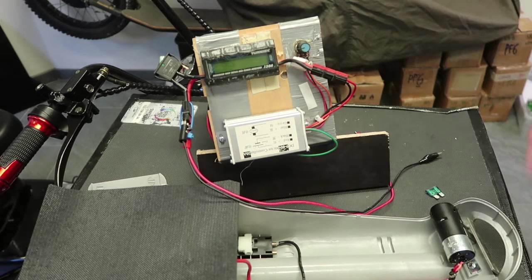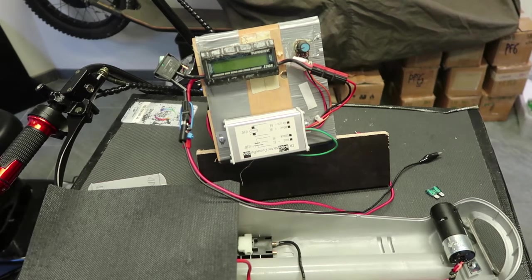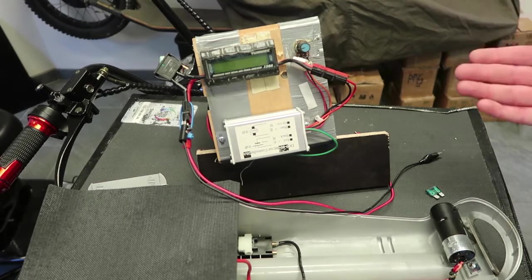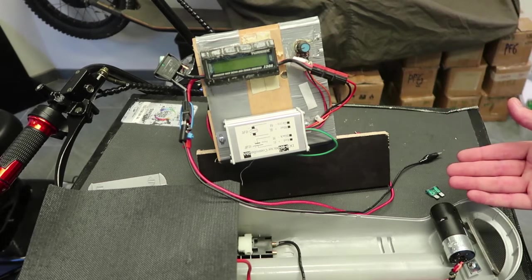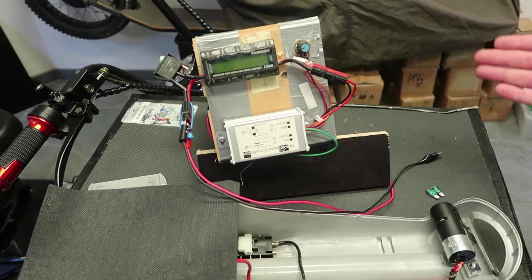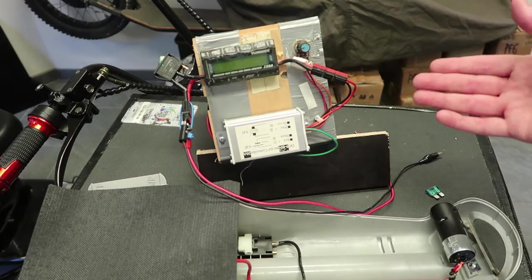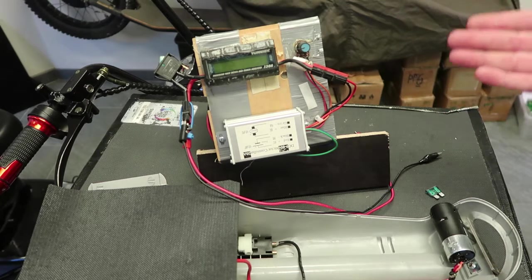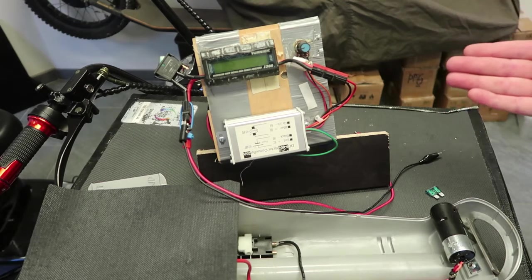You can measure the voltage or do some other tests, but this is the only actual way to see with your own eyes if a battery is working. It's very simple but this is what I use to show customers that their batteries are working and that the problem is somewhere else in the e-bike.